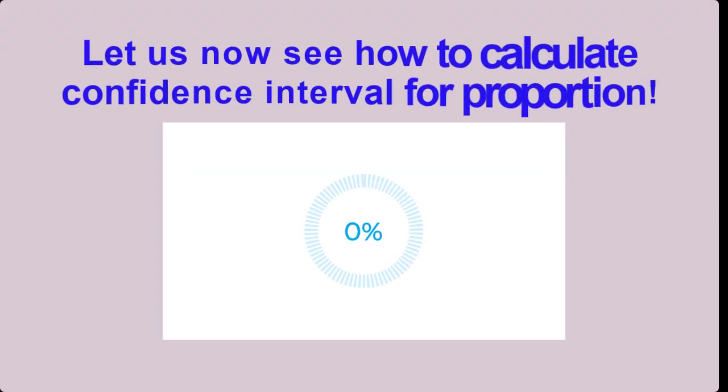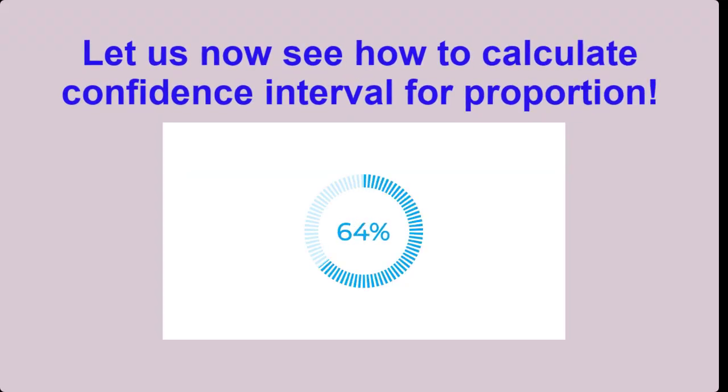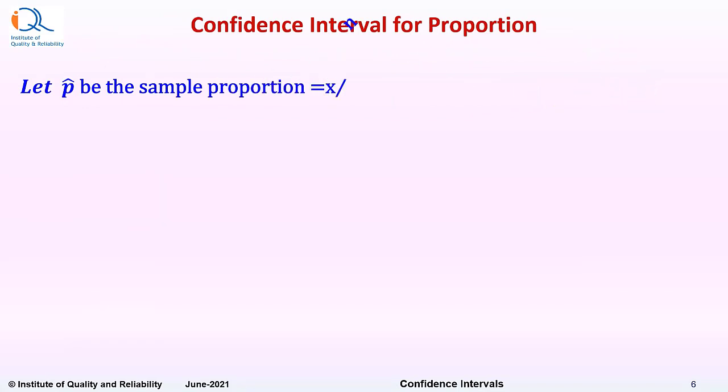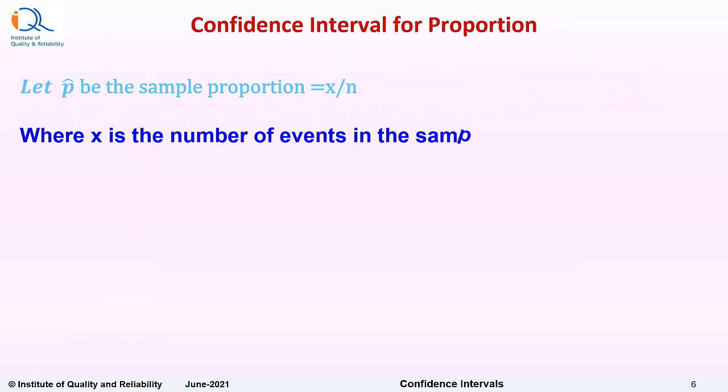Let us now see how to calculate confidence interval for proportion. Let p cap be the sample proportion which equals x upon n, where x is the number of events in the sample of size n.